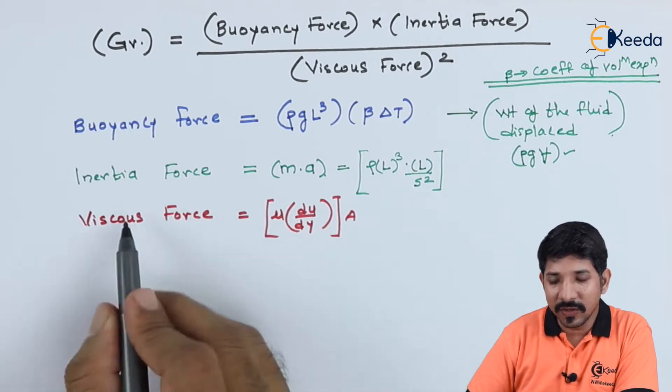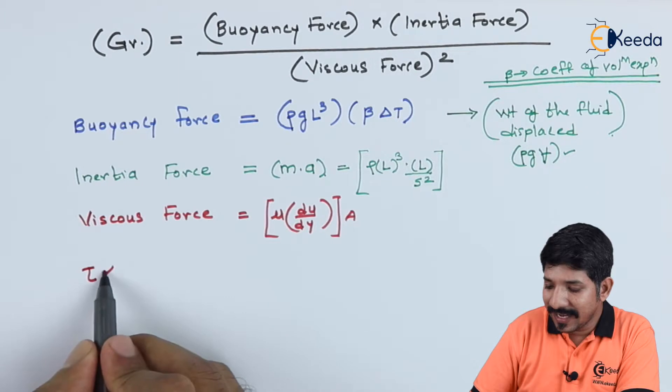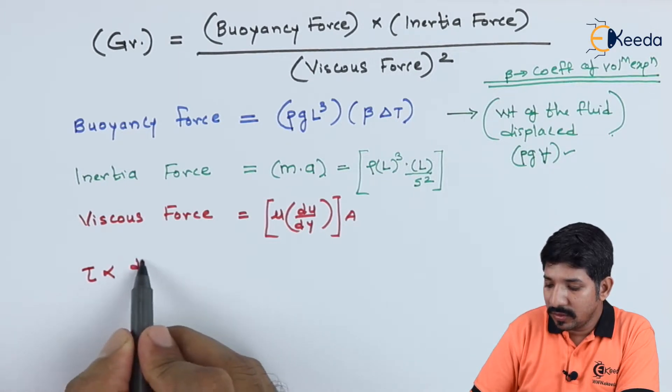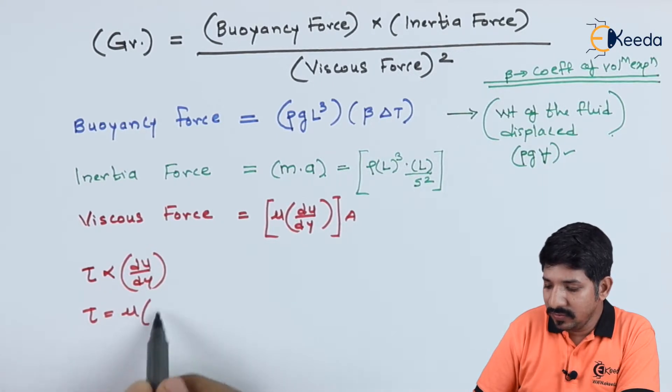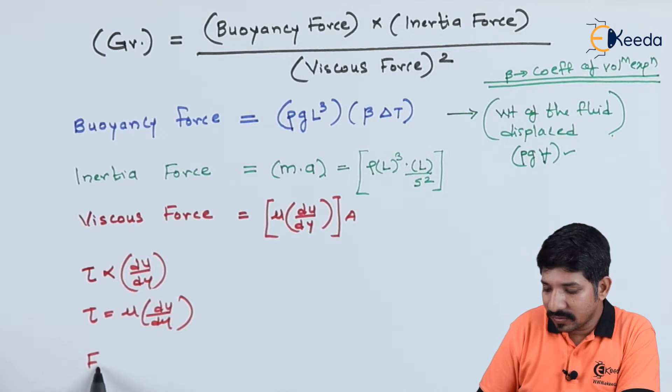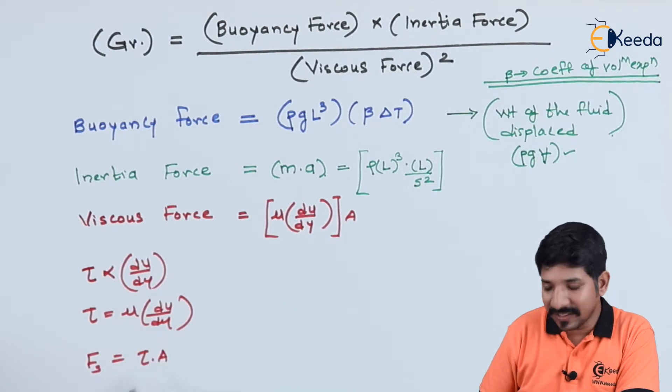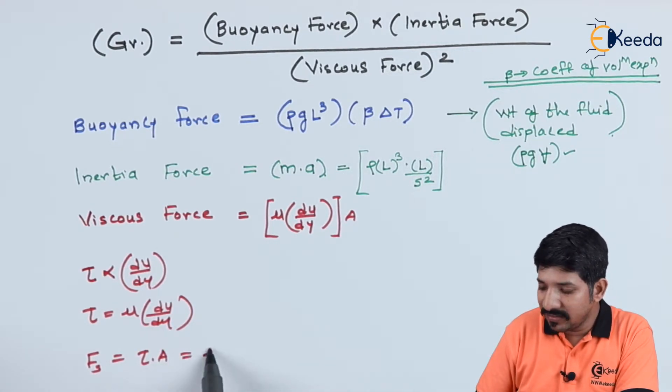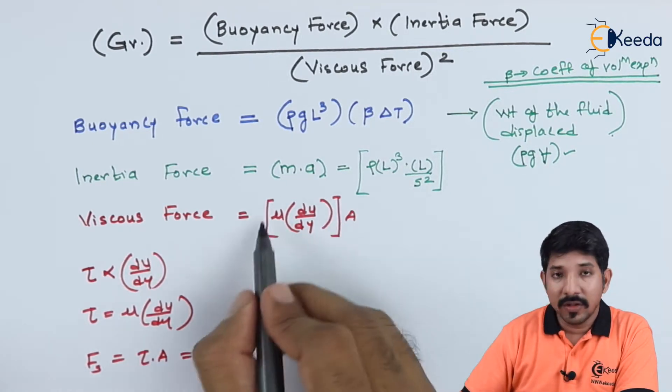Similarly, for the viscous force, we know that Newton's law of viscosity says tau is directly proportional to du by dy. Now, I can write this tau as nothing but mu du by dy. So, what is my shear force? My shear force is nothing but tau into the cross sectional area. So, I can write this as mu A du by dy. So, this is my viscous force.